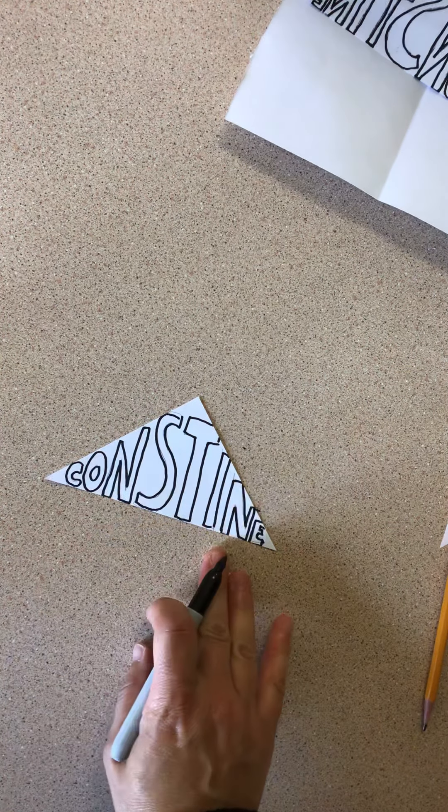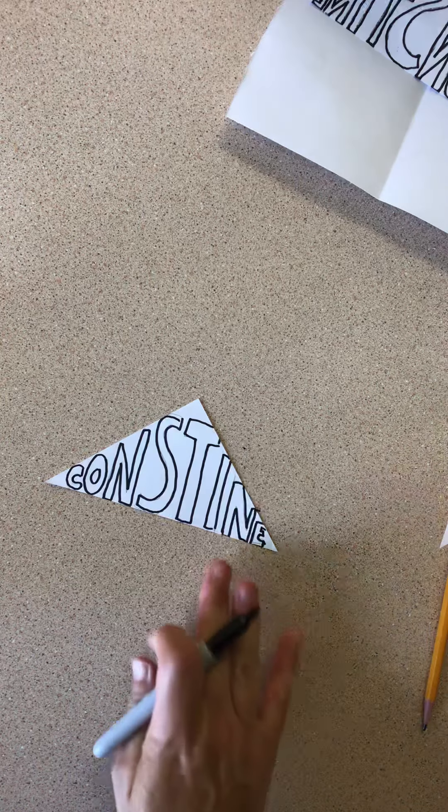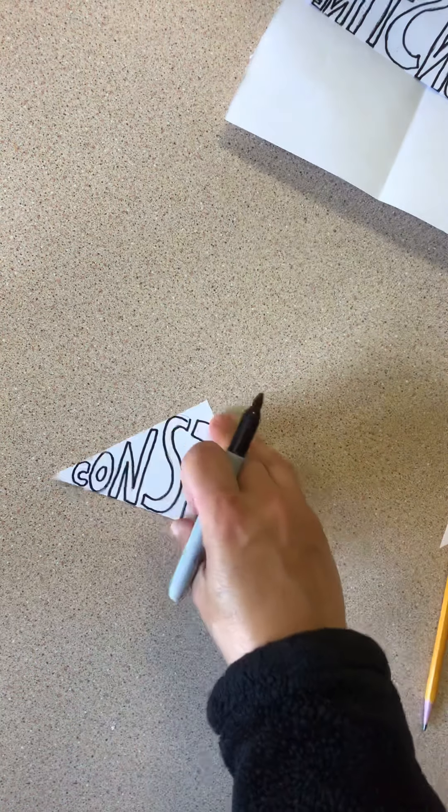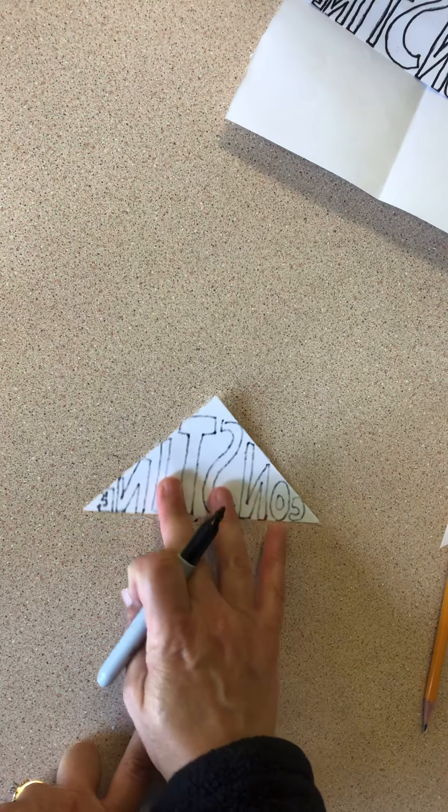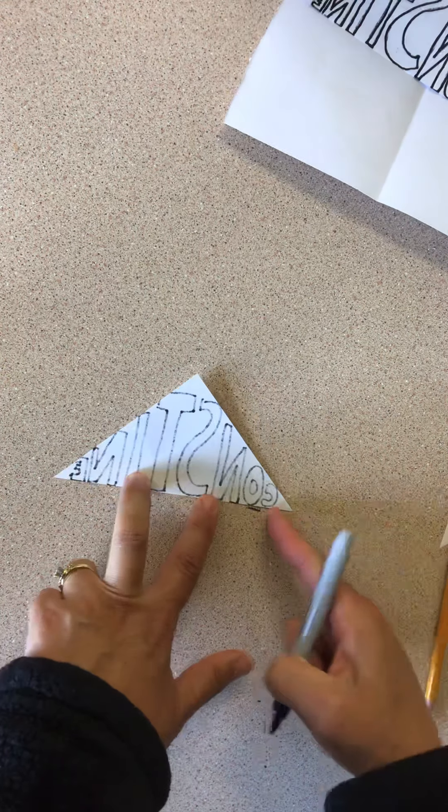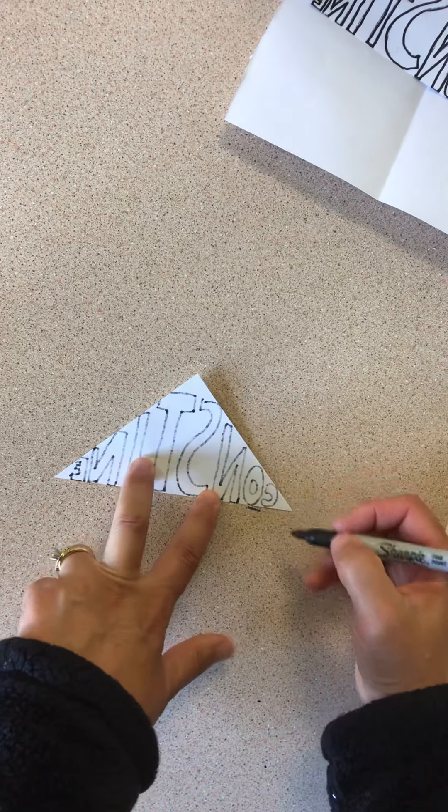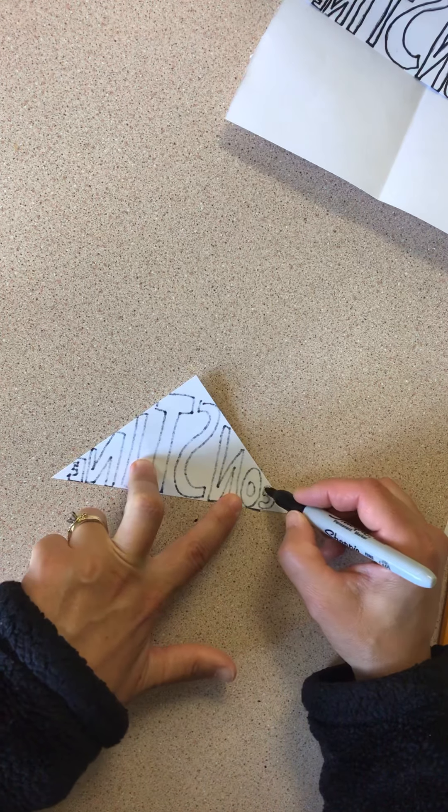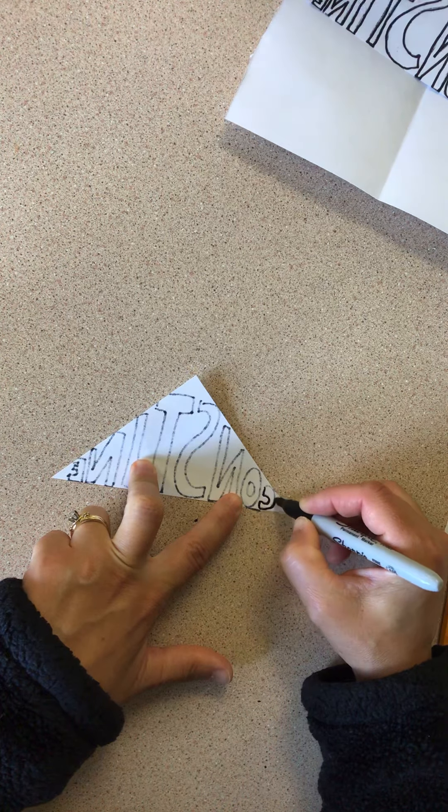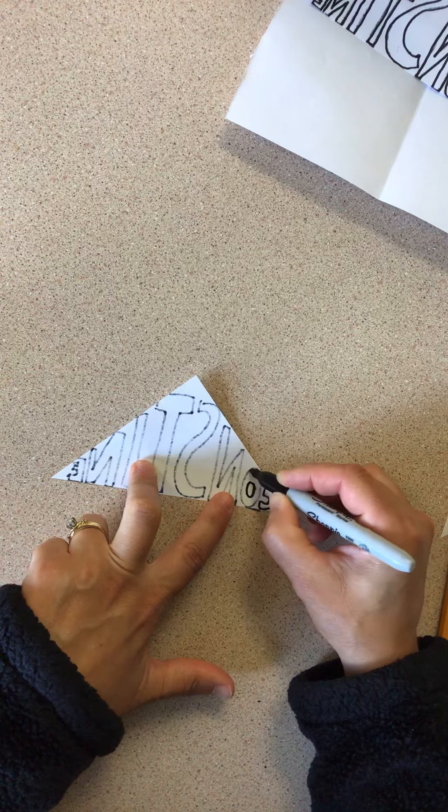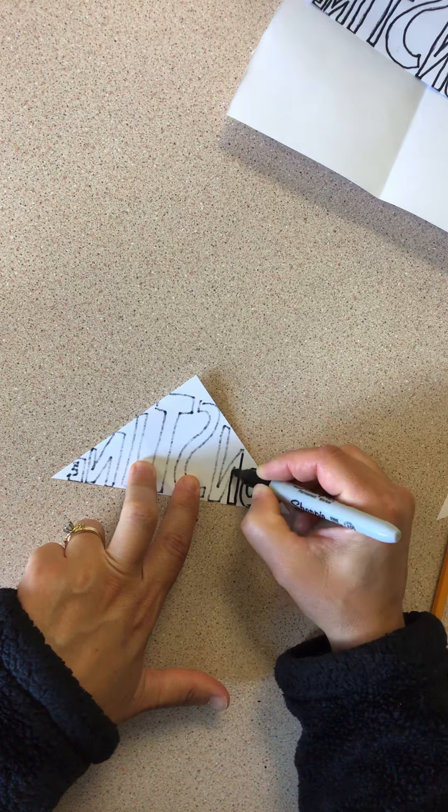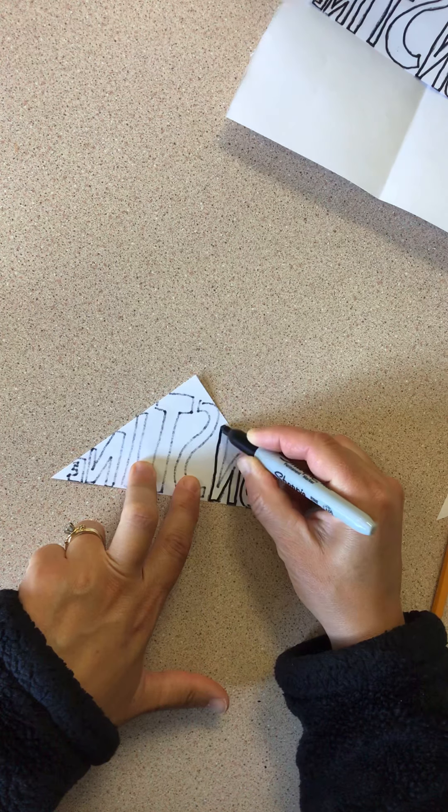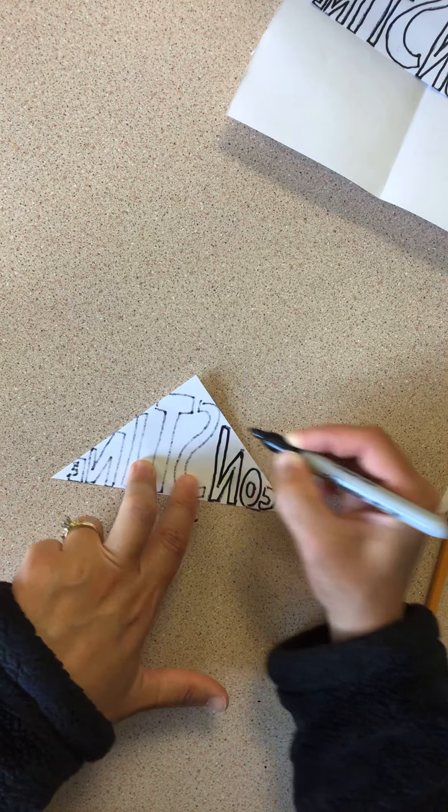So now I have my name. I outlined it in Sharpie. And now one more step before we can start to make our final design. You have to flip this over and you have to trace your letters again. So I can see through this paper. It's very thin. And I'm going to trace over my letters just like that again.